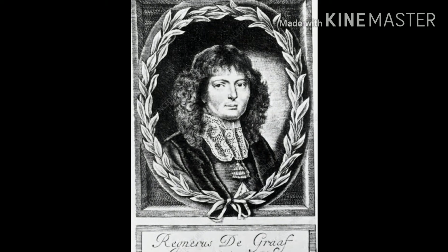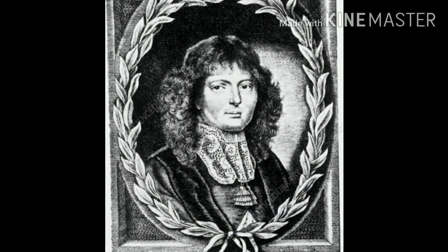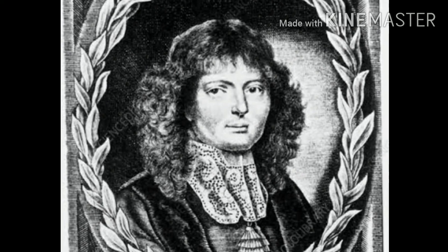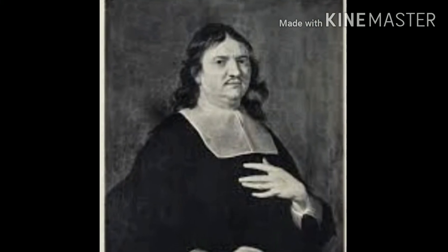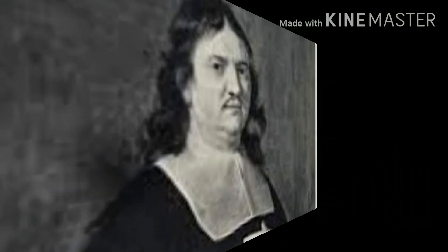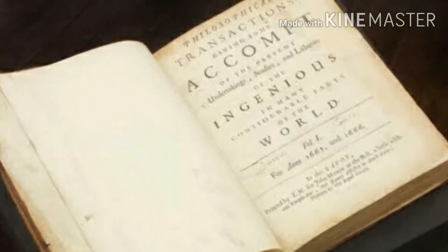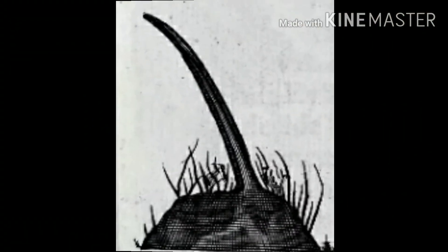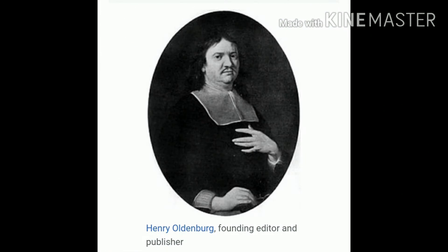In 1673, a friend of Leeuwenhoek, Rainer de Graaf, a brilliant young physician of Delft, wrote a letter about Van Leeuwenhoek's work to Henry Oldenburg, secretary of the Royal Society in London. This letter was published in the Royal Society's journal, Philosophical Transactions in 1673, in which he described the structure of the mould and the sting of a bee. Oldenburg wrote to the author requesting further communication. Thus began a correspondence with the Royal Society, which was to continue until Van Leeuwenhoek's death.